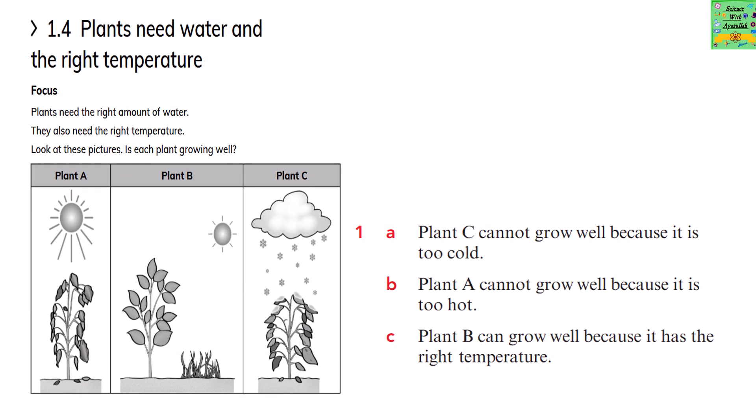Plants need water and the right temperature. Plants need the right amount of water. They also need the right temperature. Look at these pictures. Is each plant growing well? Plant C cannot grow well because it is too cold. Plant A cannot grow well because it is too hot. Plant B can grow well because it has the right temperature.